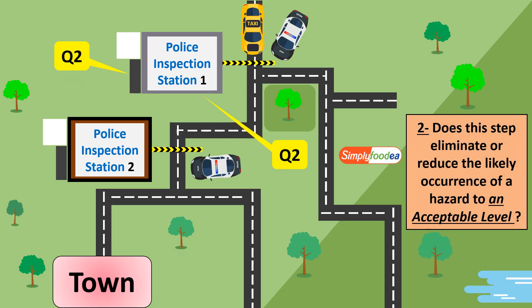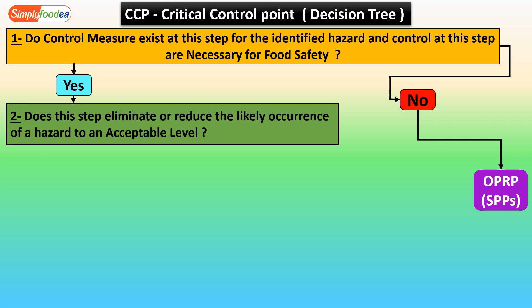The core of question number two: does this step eliminate or reduce the likely occurrence of a hazard to an acceptable level? If the answer is yes — it reduces the hazard to an acceptable level at this step — then it will be a CCP. If it is not reducing and there is a risk, the hazard will pass through and reach the customer. If the answer is no — there is no reduction of the likely occurrence of the hazard to an acceptable level — we will ask question number three.